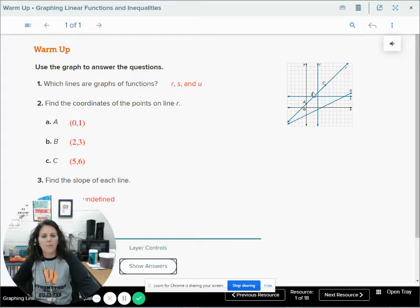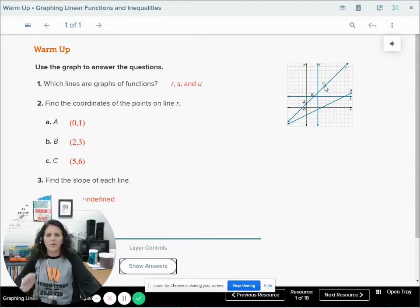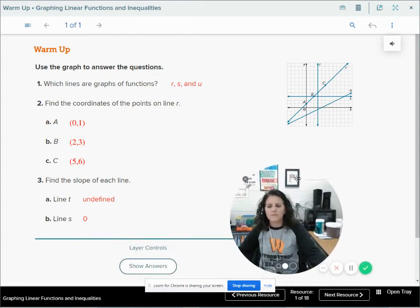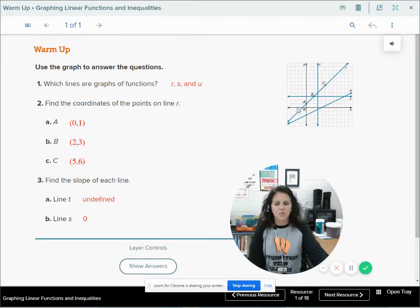To measure the slope of line R, I would go up 1, 2, 3, over 1, 2, 3. So rise over run, I went up 3 and over 3. 3 over 3 is 1. Of course, it only asks for T and S, so we can stop there. I just wanted to recap with you on how to calculate the slope of line R.